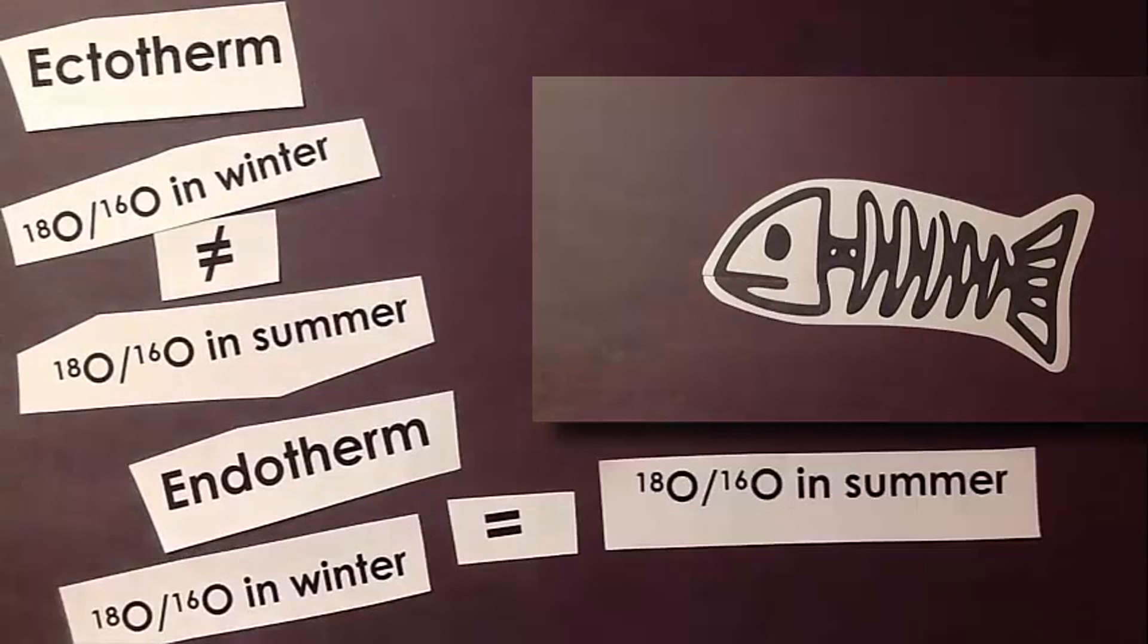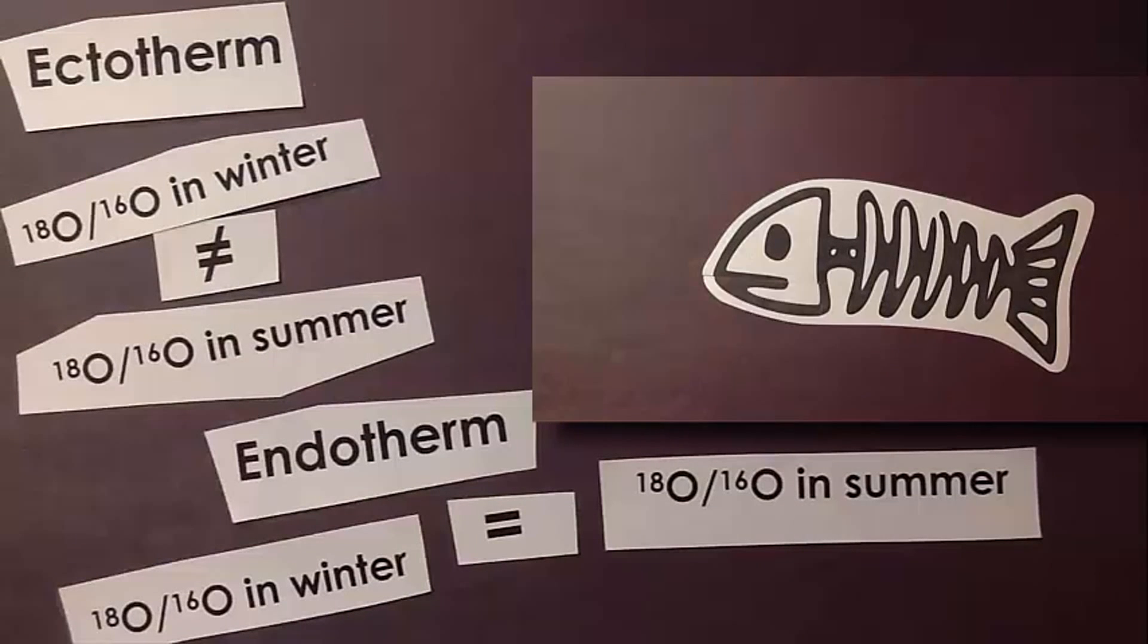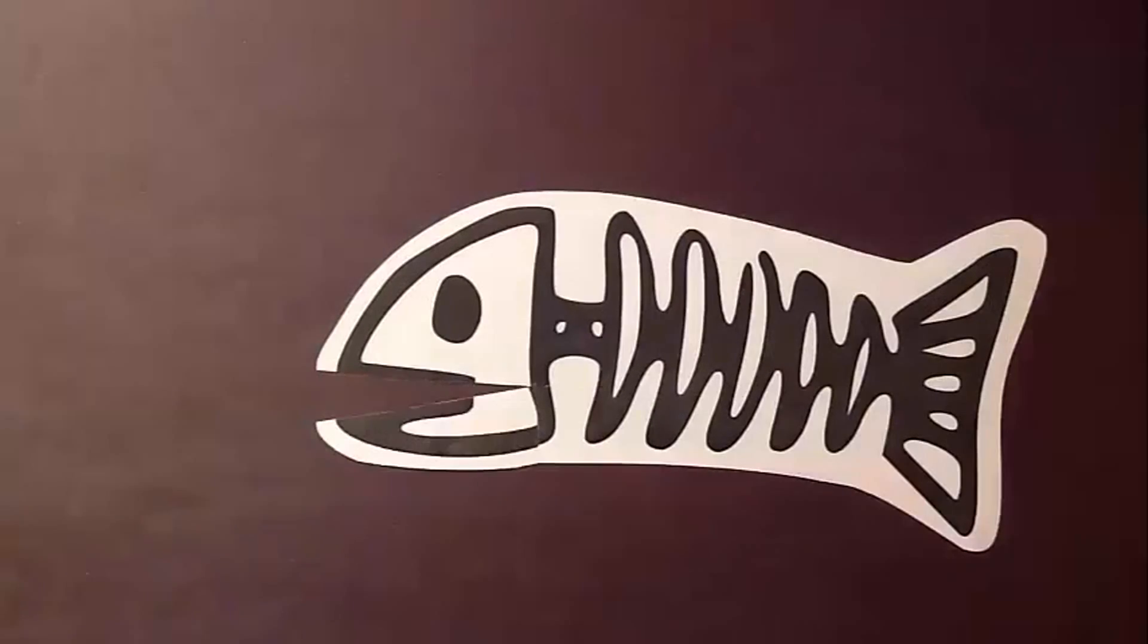But an endotherm maintains the same internal body temperature and so its bones all have pretty much the same oxygen isotope ratio. I hope you've learned a lot from me today. That you can identify a fossil even if it's only a partial specimen. Maybe learn something about its behavior or other aspects of its biology if it's found together with other fossils or artifacts.